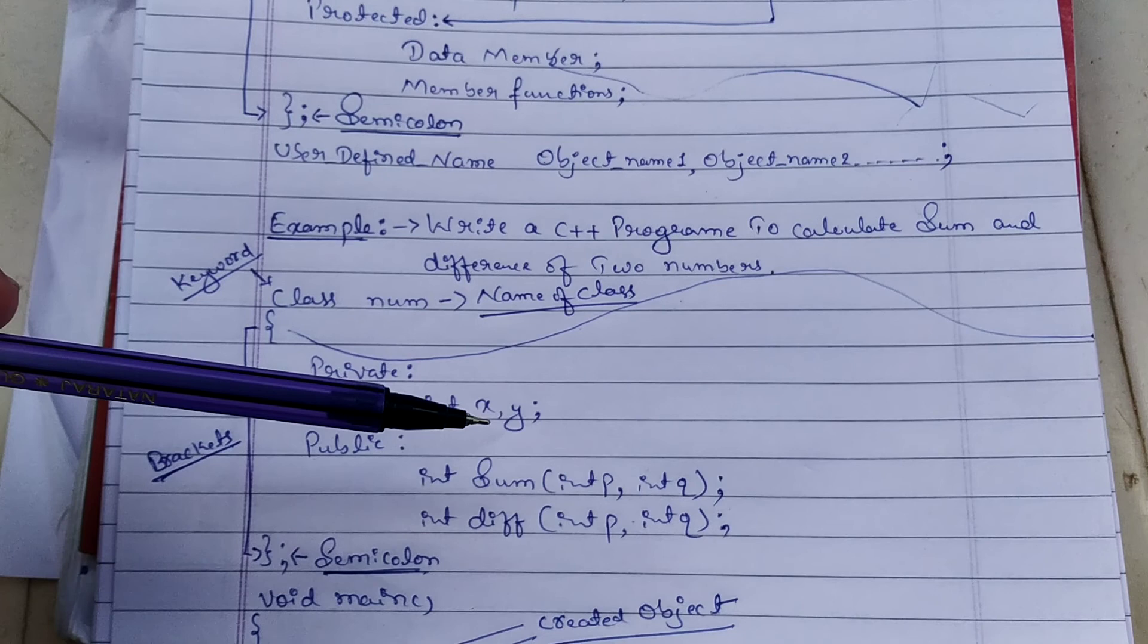Object s1 calls the sum method with 200 and 300 as int p and int q. The sum of these two numbers, 200 plus 300, gives us the s1 value of 500.